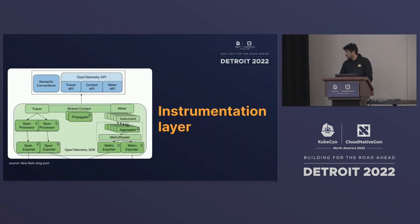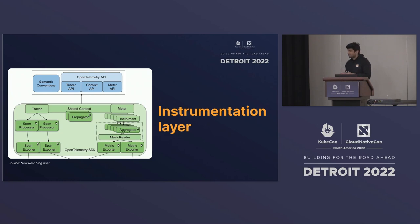In the instrumentation layer, there is the API and SDK. The API includes the Tracer API, Context API, and Meter API — the Meter API is for metrics. In the SDK, you have the propagator, span processor, and aggregator. These are the functionalities that the API and SDK offer during instrumentation.